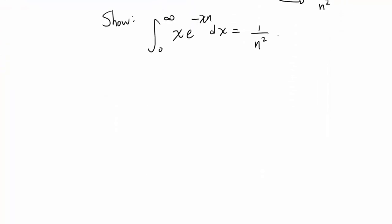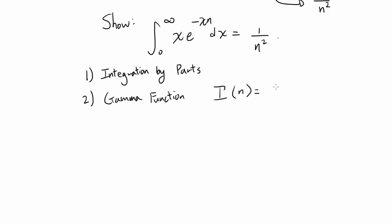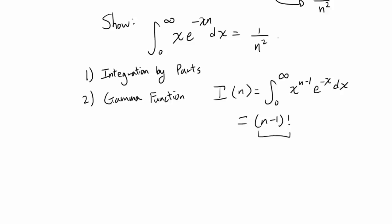There are many ways to evaluate this integral — you can use integration by parts. But the slightly quicker way is to use the gamma function. You may notice this integral looks very similar to the gamma function: Gamma(n) equals the integral from 0 to infinity of x to the n minus 1 times e to the negative x dx, and Gamma(n) equals n minus 1 factorial. So if we can write our integral in the form of the gamma function, we can evaluate it instantly.